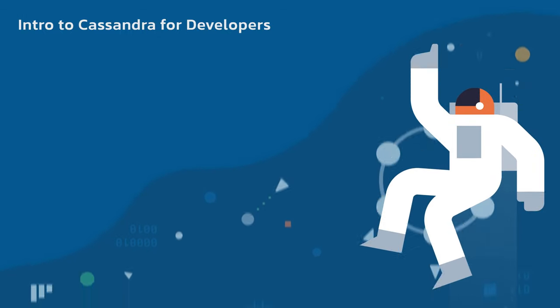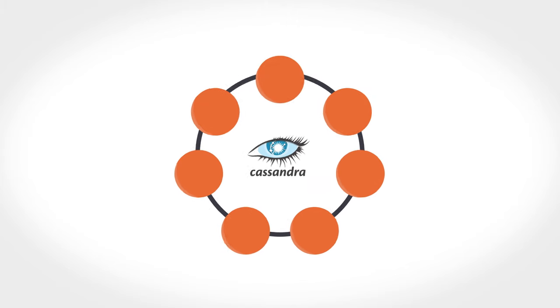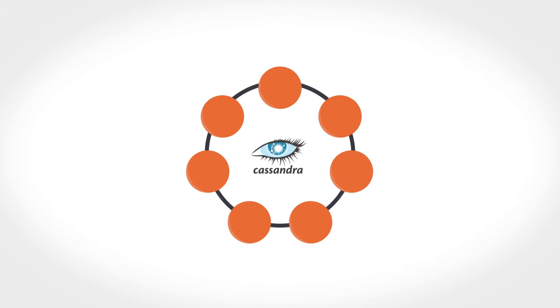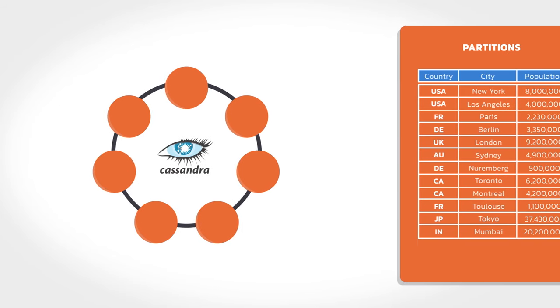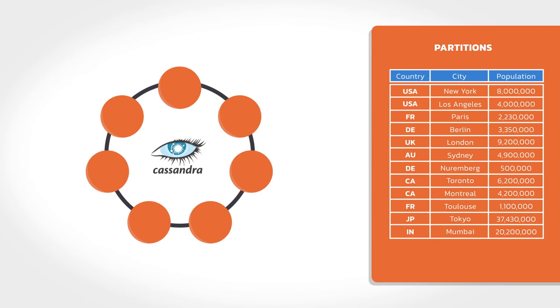One of the questions I get asked a lot is: if Cassandra is a distributed database and I have some set of data, how does it know where to put data or how to get it later if I want to read it? Data in Cassandra is divided up into what are called partitions. Take a look at the example table to the right. Notice we have three columns: country, city, and population. Country is our partition key in this case.